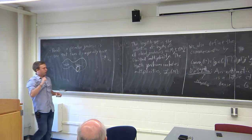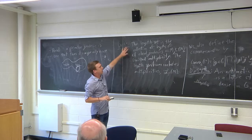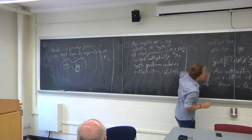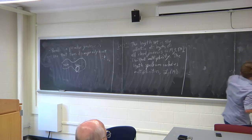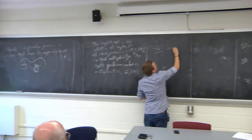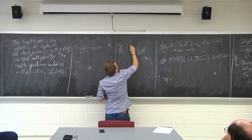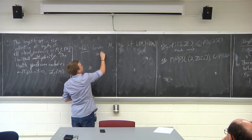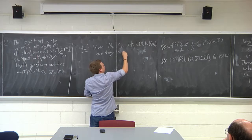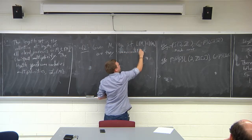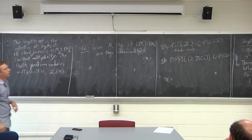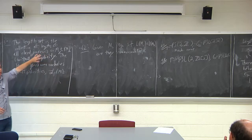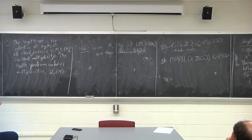As a brief detour: the collection of lengths of closed geodesics has a long history. A classical question is: given two manifolds M₁ and M₂ such that their length sets are the same, are they commensurable? This relates fairly heavily to the 'can you hear the shape of a drum' type questions, where there's a spectral side using the Laplacian via the trace formula.